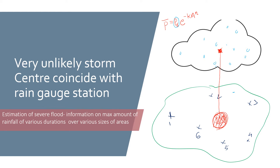The exact determination of P₀ is not possible. It is very difficult — P₀ represents the highest rainfall depth at the storm center, and the rain gauge station may not coincide exactly with that point.